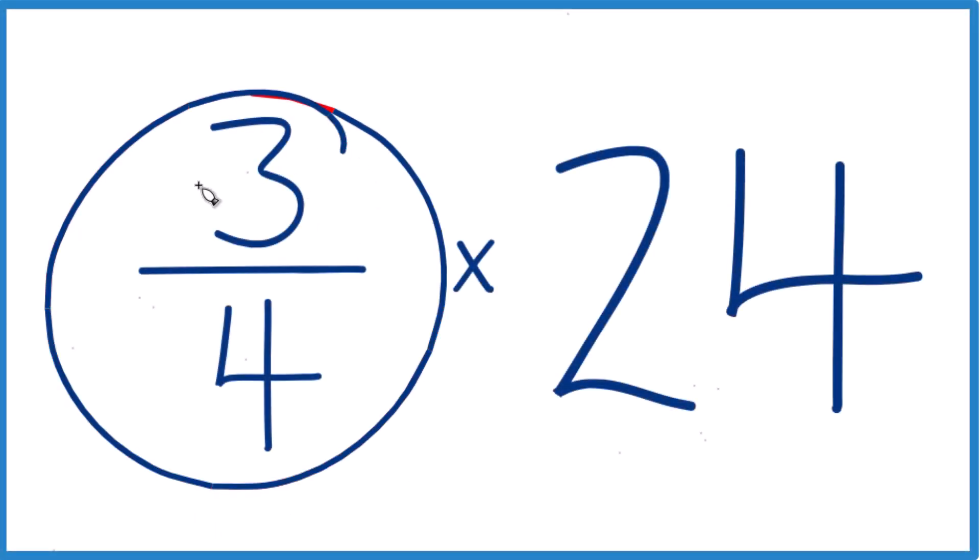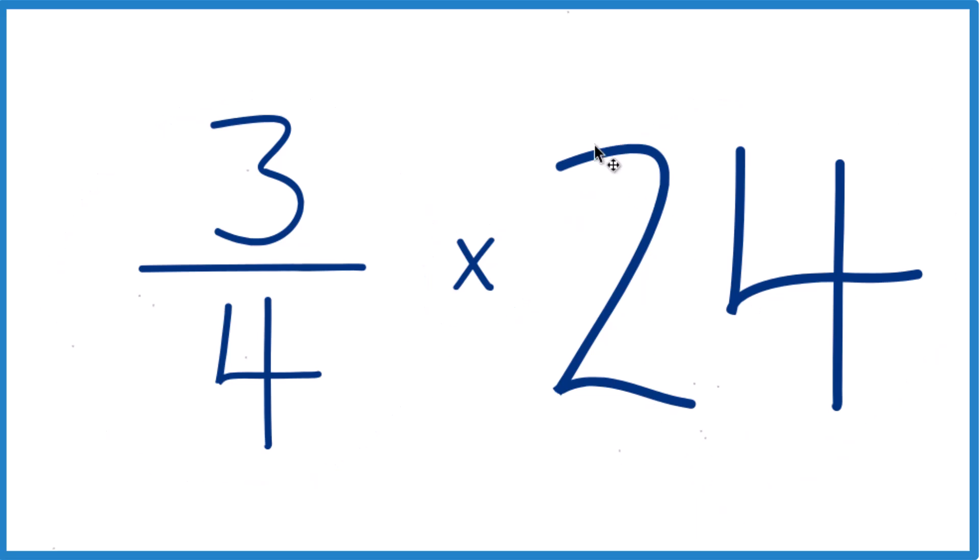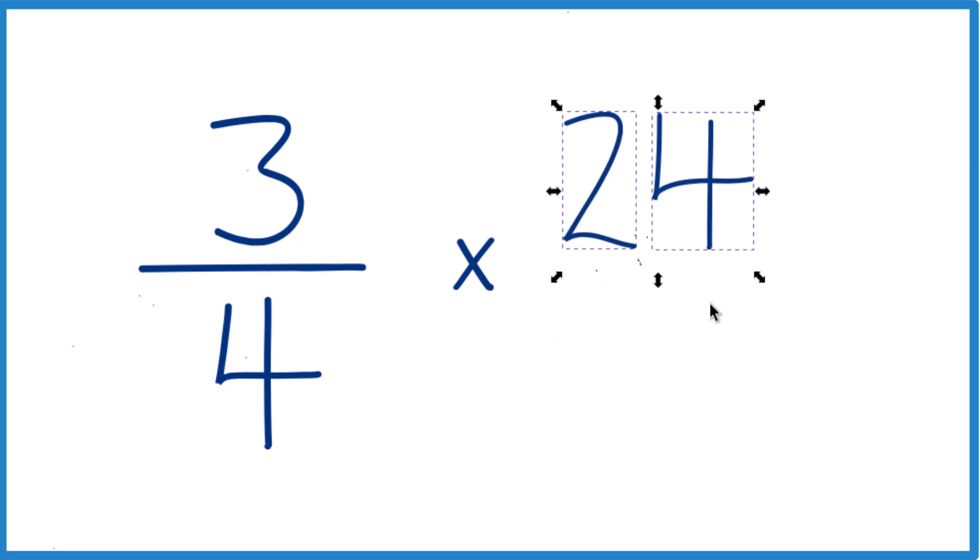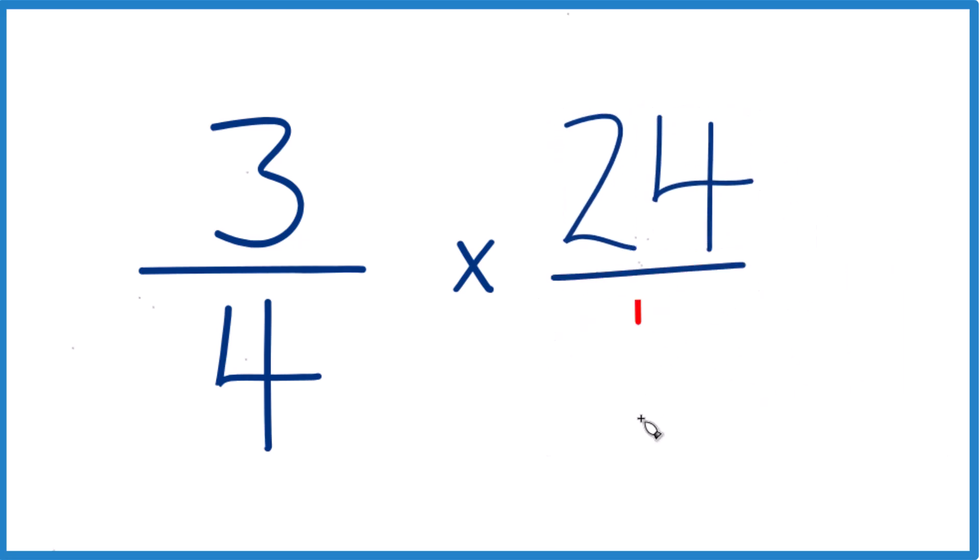If you need to multiply 3 fourths by 24, here's how you do it. Let's take the 24 here and call it 24 over 1. It's still 24, we're just dividing by 1, but now everything lines up nicely.